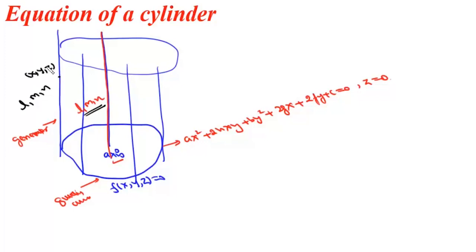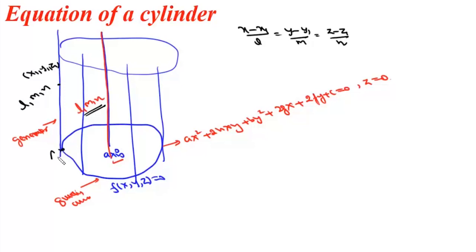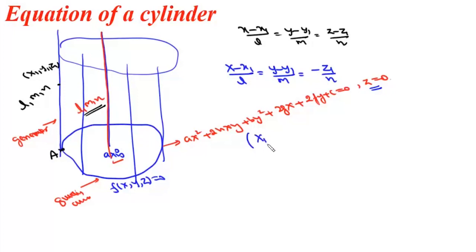Let X, Y, Z be any point on this cylinder. We take a point on this generator as X1, Y1, Z1, then we can write the equation of this generator as (X − X1)/L = (Y − Y1)/M = (Z − Z1)/N. Now a point A will lie on the guiding curve where Z = 0. If we put Z = 0, we get (X − X1)/L = (Y − Y1)/M = −Z1/N. So the coordinates of point A will be (X1 − Z1·L/N, Y1 − Z1·M/N, 0).